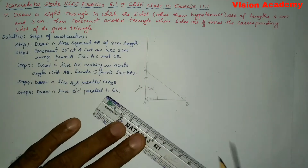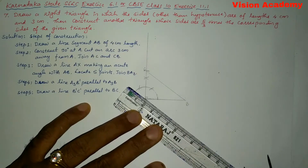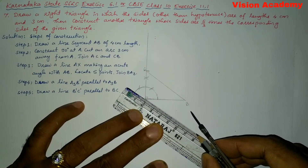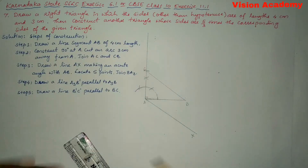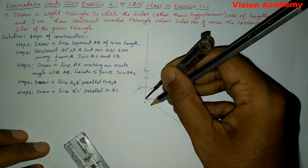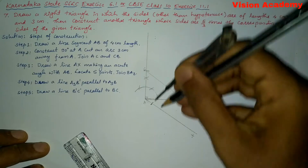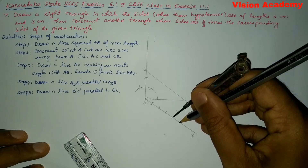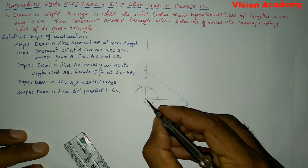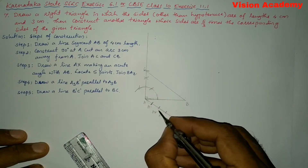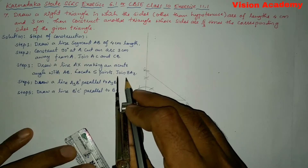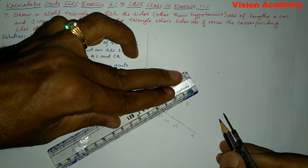Now step 3: draw a line AX making an acute angle. An acute angle is less than 90 degrees. Here let us name this as AX. Next, locate 5 points: draw 1, 2, 3, 4, and 5 and name them as A1, A2, A3, A4, and A5. Next, join BA3, so let us join BA3.